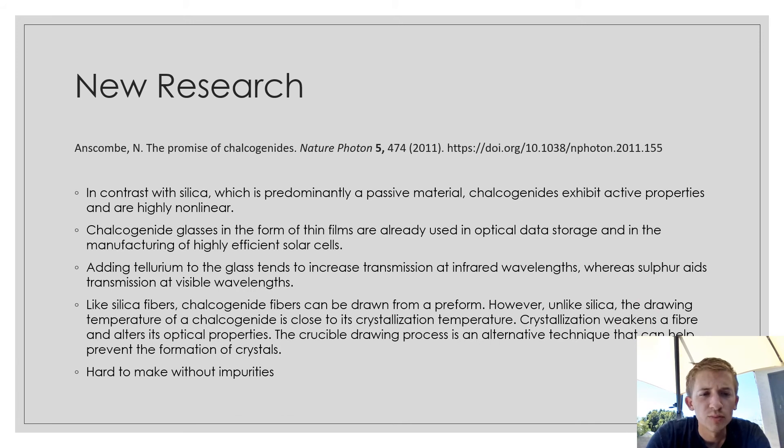I also looked at some new research. In contrast to the silica, which predominantly is a passive material, the chalcogenides exhibit active properties and are highly nonlinear. The chalcogenide glasses form a thin film and can be used for optical data storage and in manufacturing of highly efficient solar cells. Adding tellurium to the glass tends to increase transmission at infrared wavelengths, whereas sulfur aids in transmission at visible wavelengths.